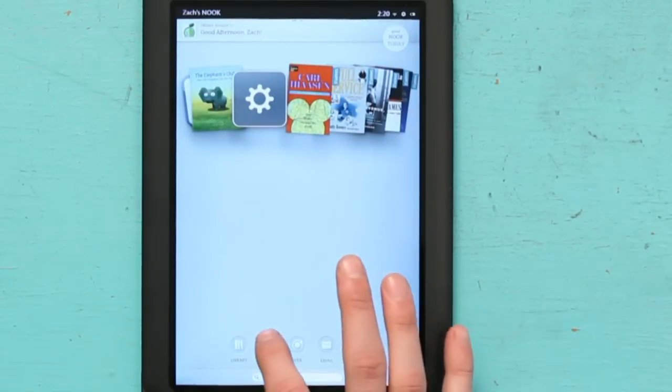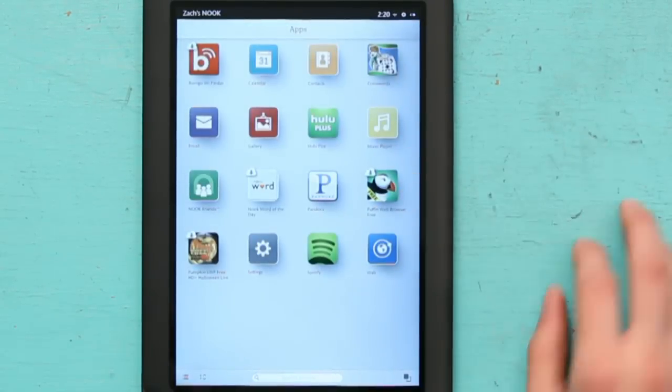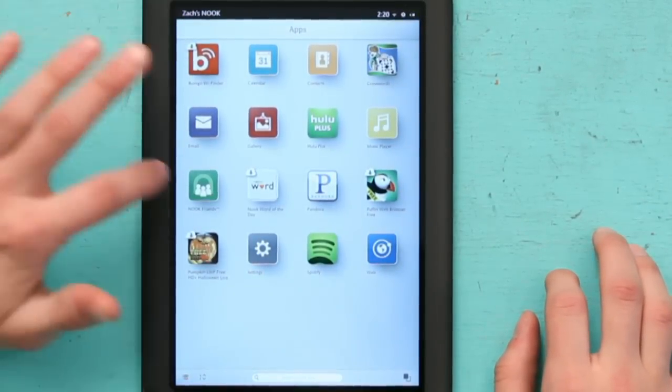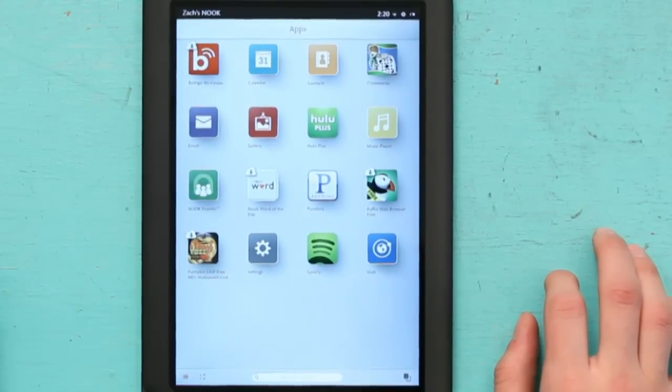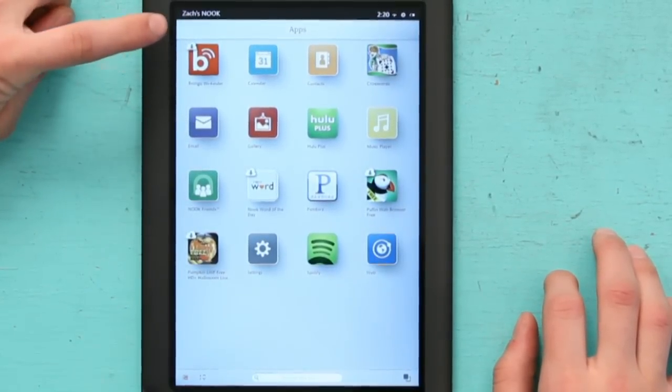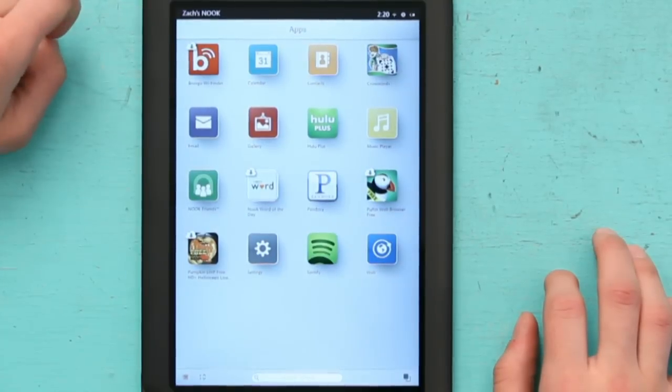One thing to get your apps back is to look up here. I have Boingo Wi-Fi Finder. As you can see, there's a little cloud with a down arrow. Just hit the down arrow and it will download what you used to have.